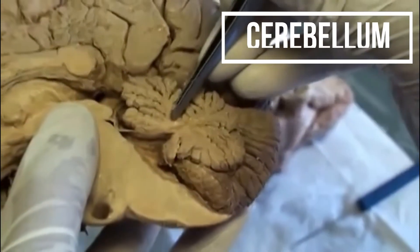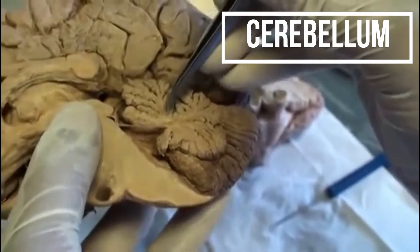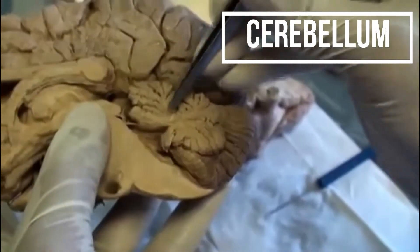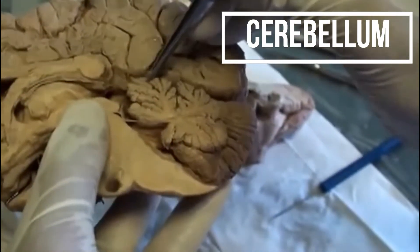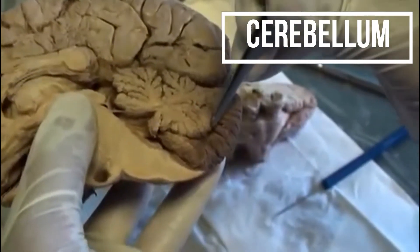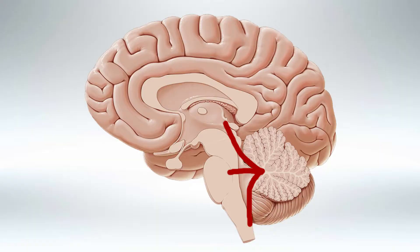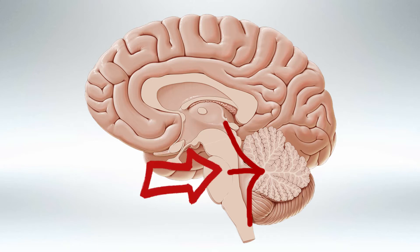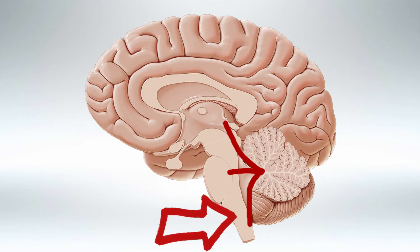Welcome back. In this video we'll be talking about the cerebellum and we'll try to cover everything that you need to know for your Step 1 exam. The cerebellum has three peduncles, indicated here by the red lines: the superior peduncle, the middle peduncle, and the inferior peduncle.